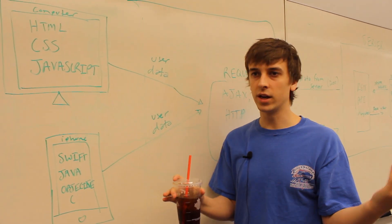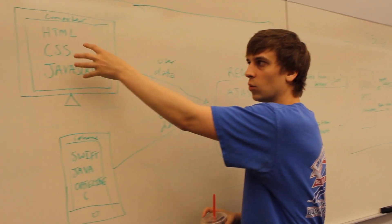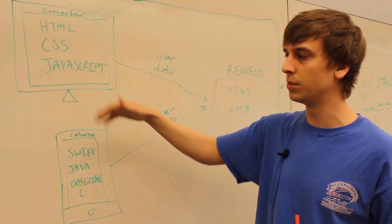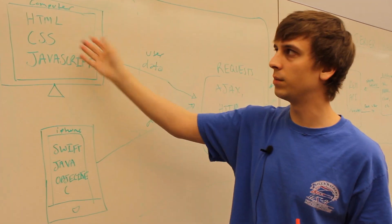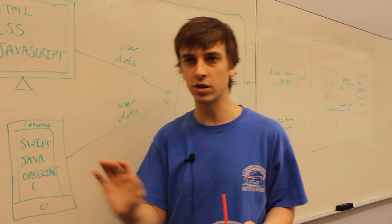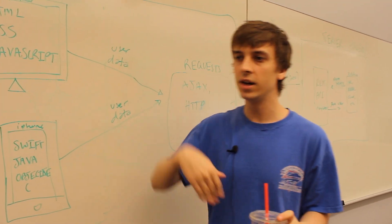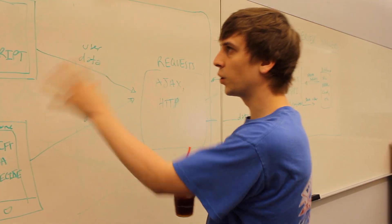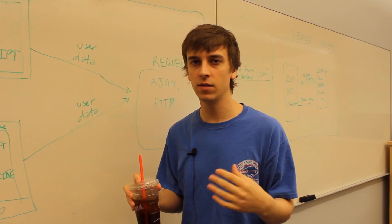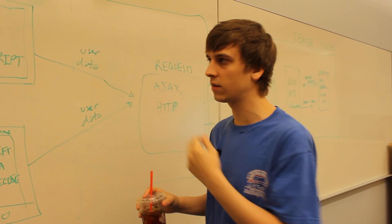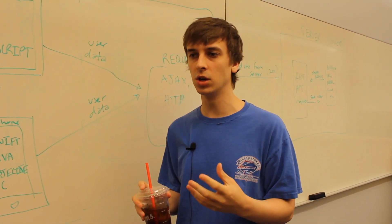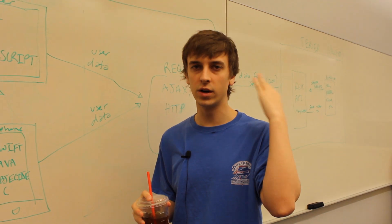If you have an error, you won't be confused about whether it's client-side or server-side. If the error is in the front-end code, you debug it in the browser console. For the back end, you have a server running on your computer — maybe in Python, Java, or Node.js — and you'll see errors in your terminal. It becomes pretty clear once you understand the difference between front end and back end and how they communicate.